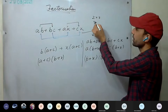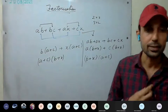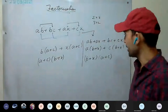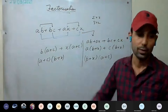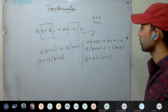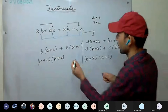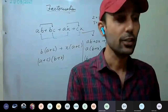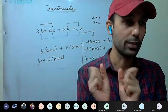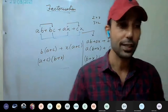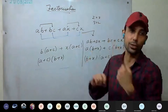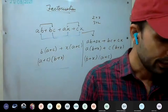Whatever applies to numbers applies to these expressions too, because variables represent numbers only. You can take any two terms which have something common and group them — the remaining two should also have something in common. As you practice, you get to know these things. Sometimes you may group but find no common factor at the end, so you have to change your grouping.